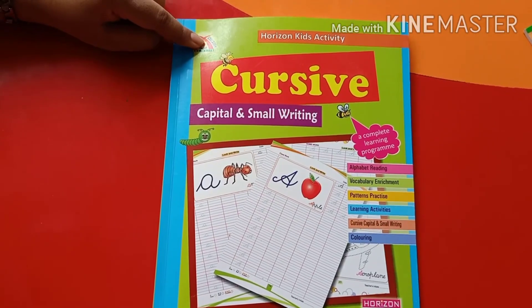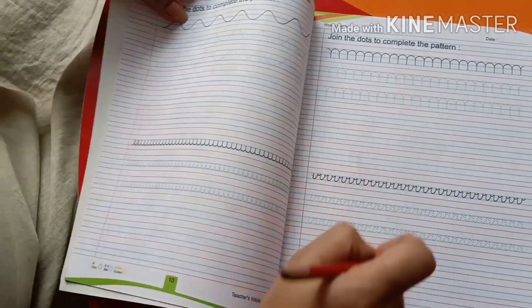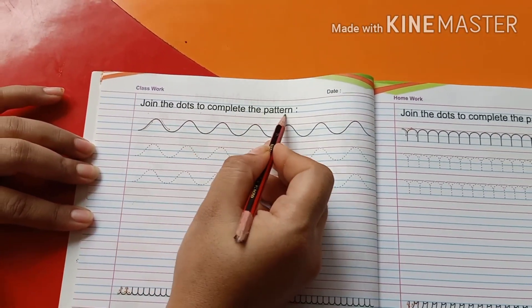Now kids, take this book cursive capital and small writing and open the page number 10. Join the dots to complete the pattern.